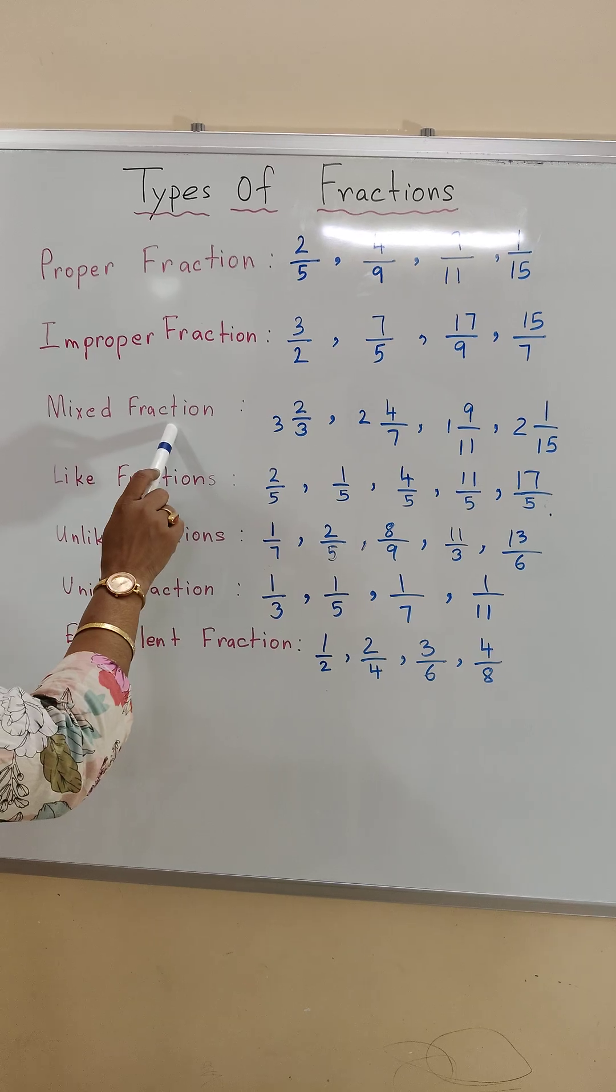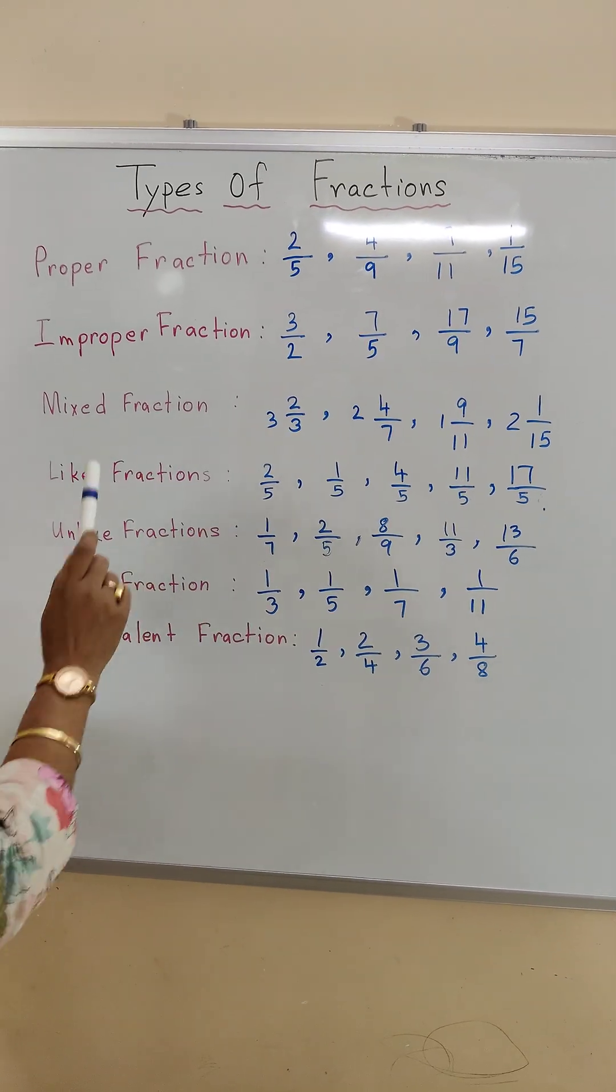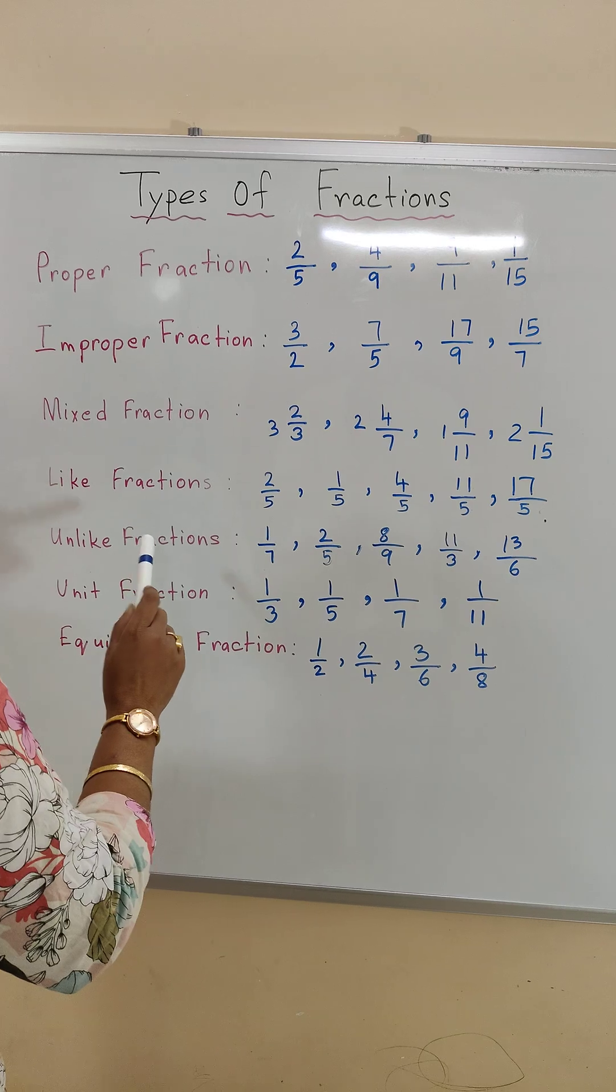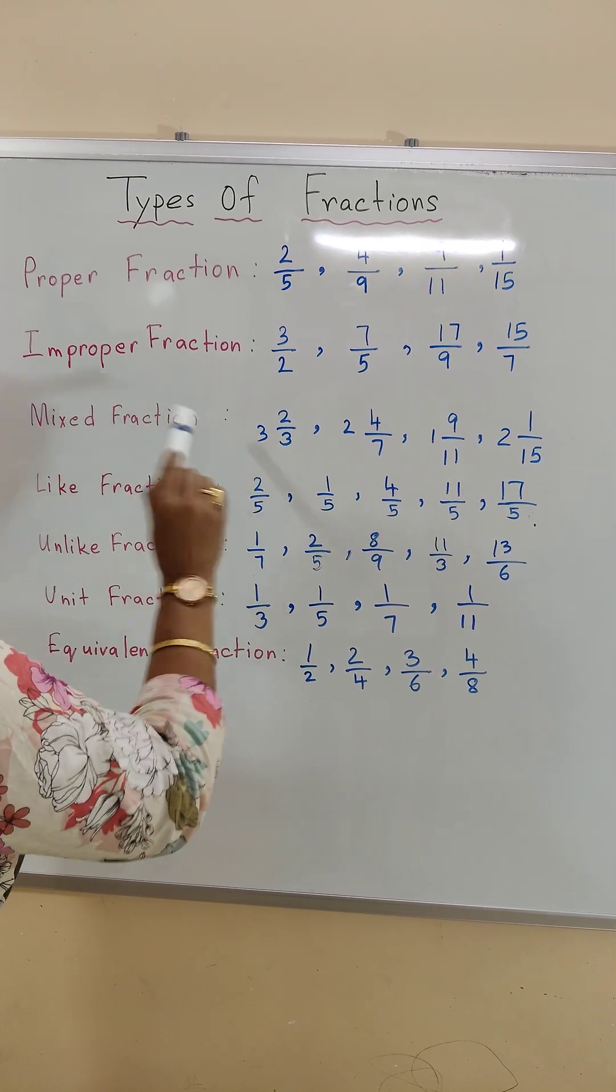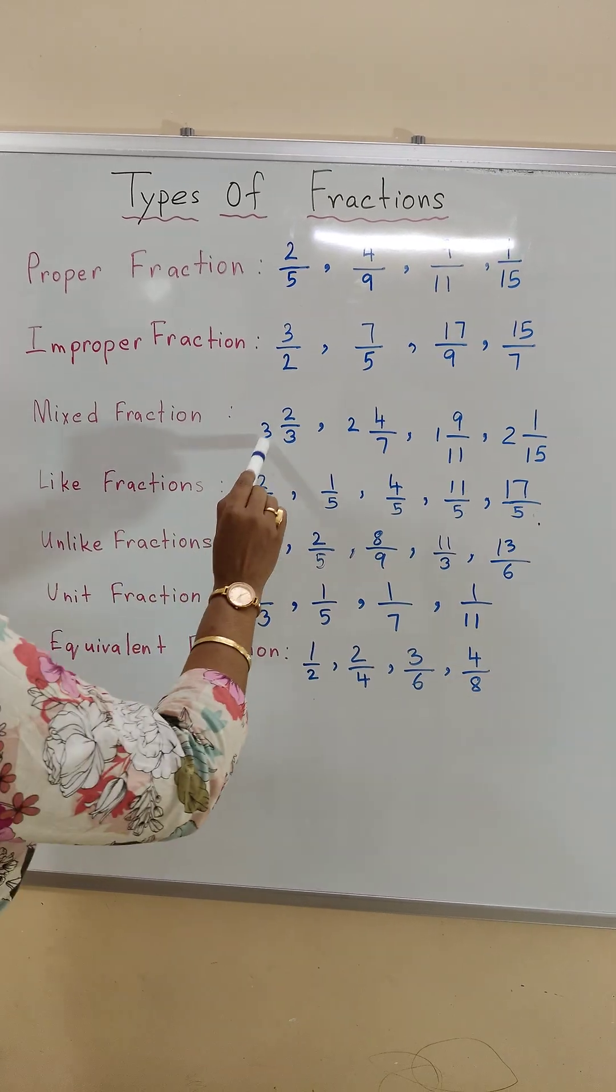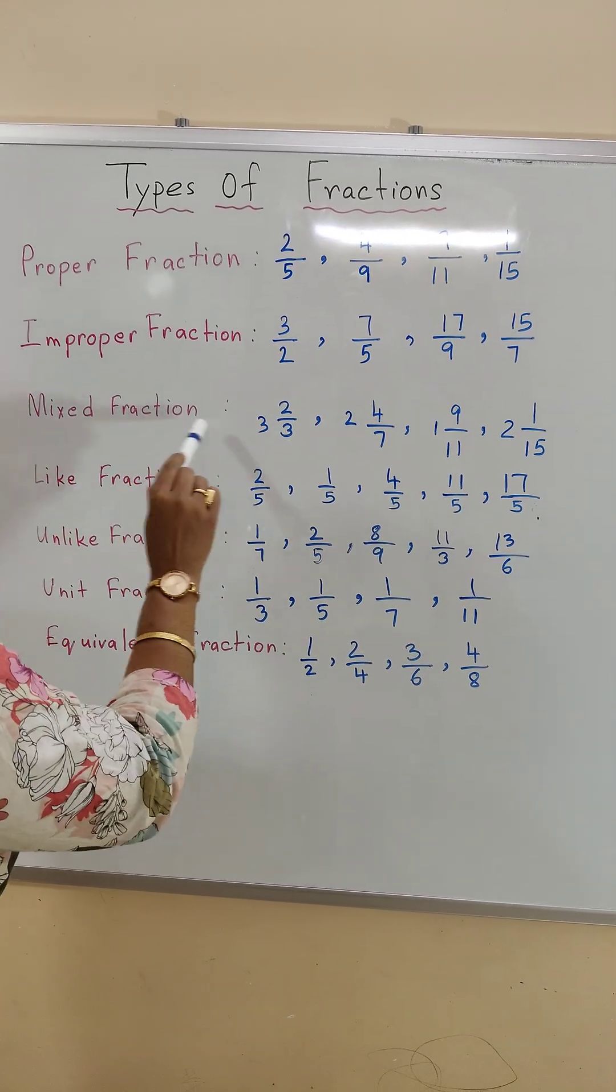Number three, mixed fraction. Mixed fraction is a combination of proper fraction and a whole number. So 2 by 3 is a proper fraction and 3 is a whole number. So 3 and 2 by 3 is an example of mixed fraction.